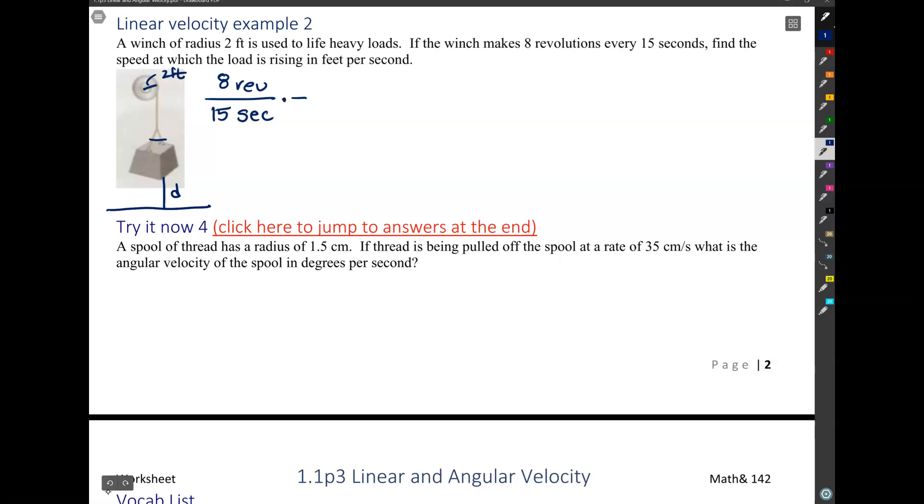Because we should be able to say, so there's choices here. Just make sure you show me really clear work or I'm not going to be able to sort through if anything goes wrong. But we know that in one revolution, the rope,